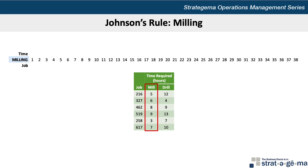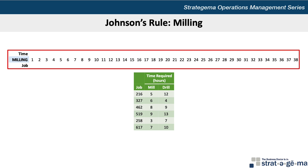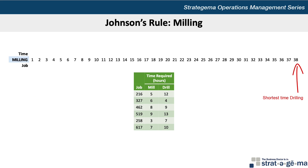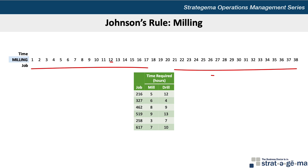Since the process must go through the milling department first, we will use that department to determine the sequencing. The total time to complete all jobs in the milling department is 38 hours, so we can start by drawing a 38-hour timeline. When applying Johnson's rule, the shortest processing time should be found. If this time corresponds to the mill operation, then the job should be sequenced first. If it corresponds to the drill operation, the job should be sequenced last. Then use the next shortest processing time and work inward from the ends of the sequence until all jobs are scheduled.